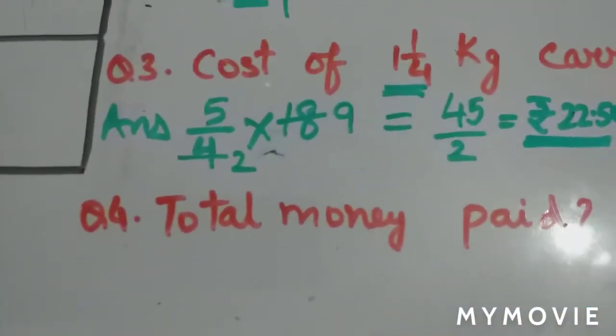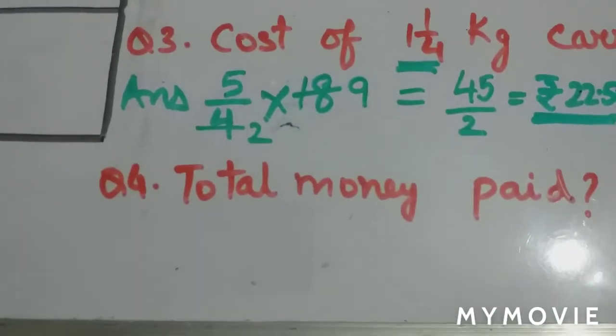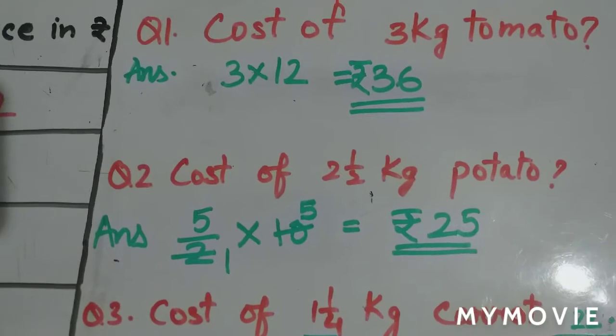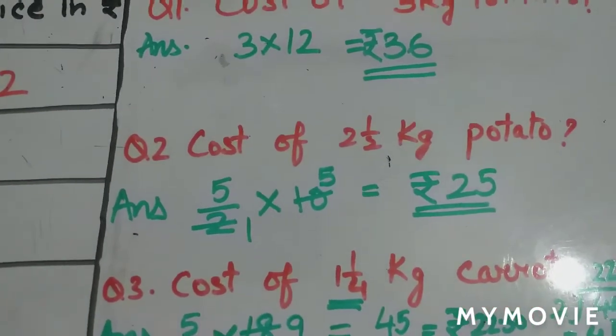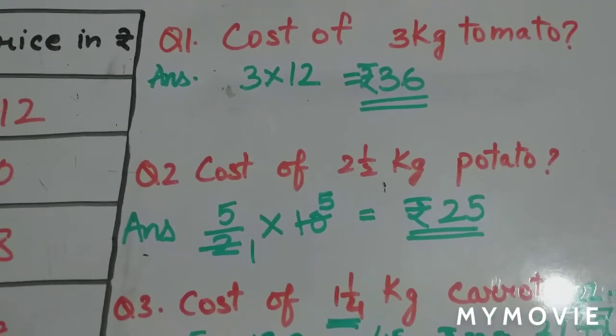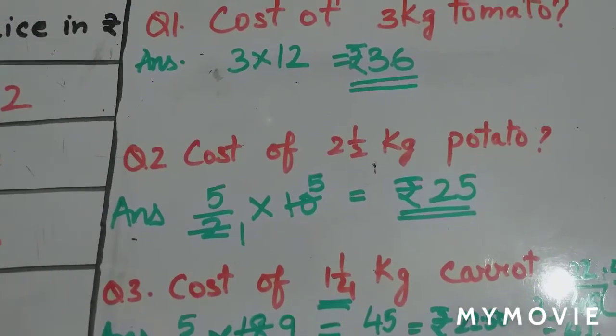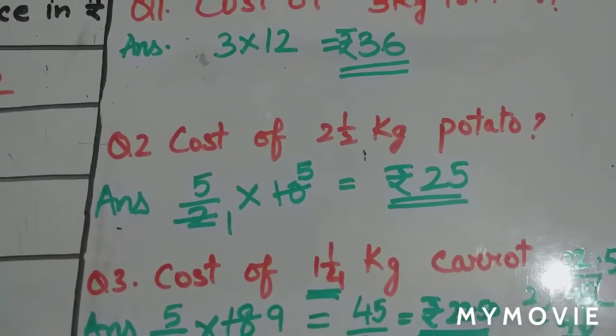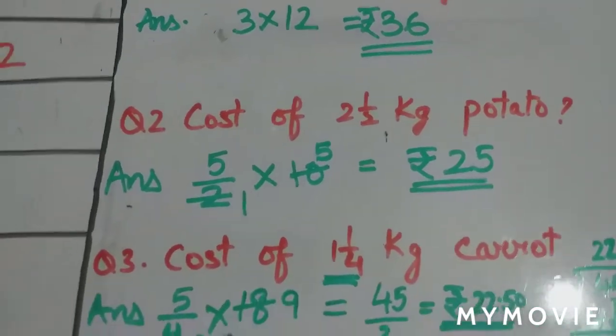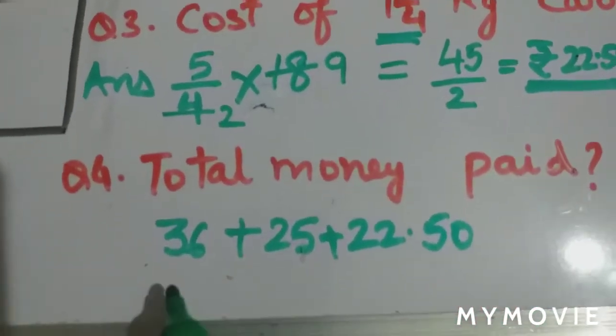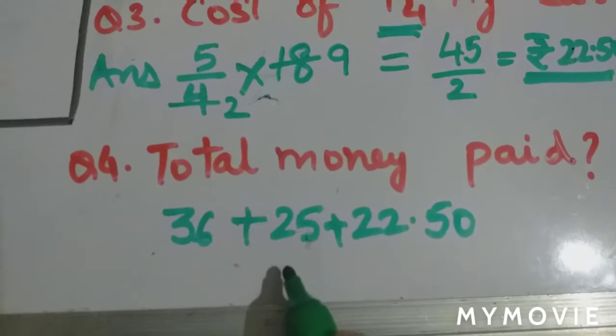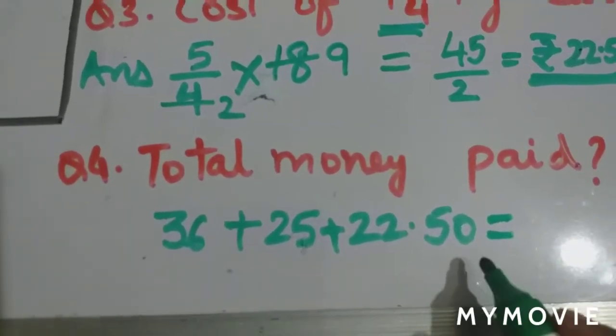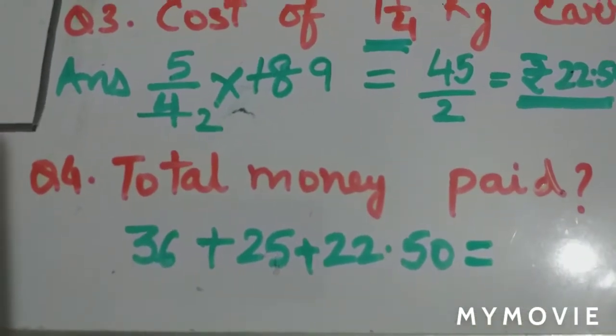Now they are asking total money paid. The person who buys these vegetables paid 36 rupees for tomato, 25 rupees for potato, and 22 rupee 50 paise for the carrots. We will be simply adding this. Whatever is the total of the three, that is the money he is going to pay.